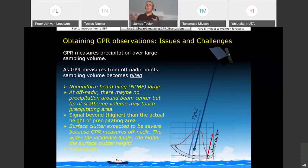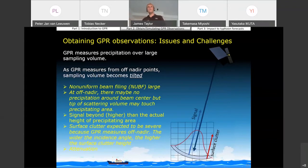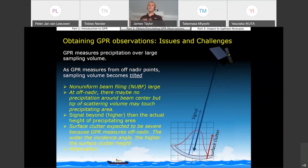At the same time, we're expecting the issue of surface clutter contamination to be very severe for this type of instrument, again because the beam and sampling volume is tilted. With the wider incident angle, we would expect contamination from surface clutter to be even higher in the observations. So we're expecting this to be quite an important issue that we need to think about. And of course, then we also have issues with attenuation. There are many challenges with this type of instrument that we need to consider.